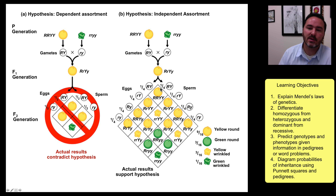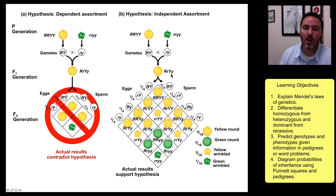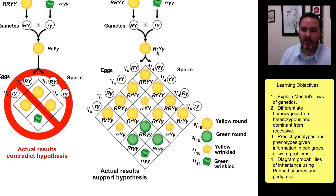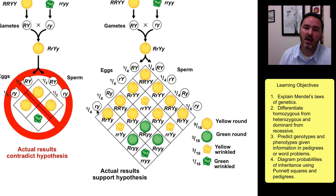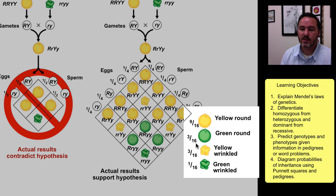The Punnett square is much more difficult in this case — it ends up being a four by four. A big R, little R, big Y, little Y individual can make four types of gametes: big R big Y, big R little Y, little R big Y, and little R little Y. So there are four possibilities for eggs and four for sperm. Counting up the outcomes gives nine yellow round, three green round, three yellow wrinkled, and one green wrinkled — a nine to three to three to one ratio.